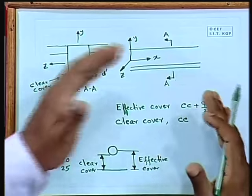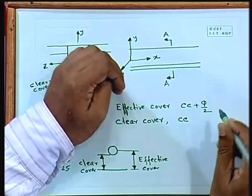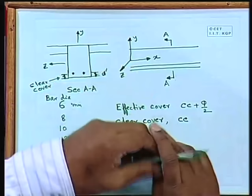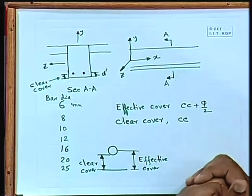Why do we need clear cover? One important reason is to protect steel from corrosion. There are also environmental aspects — we cannot place bars immediately at the outer surface of the concrete. That is why we must provide adequate cover.